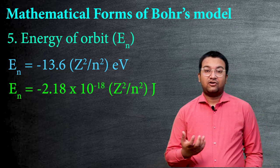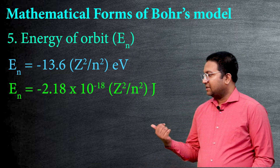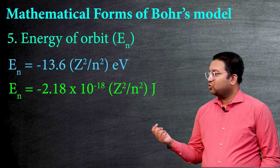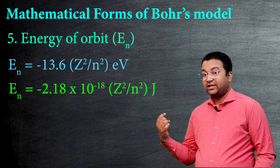Suppose if instead of electron volts you want to calculate it in joules, the answer will be En equals 2.18 × 10⁻¹⁸ into Z² upon n² in joules.